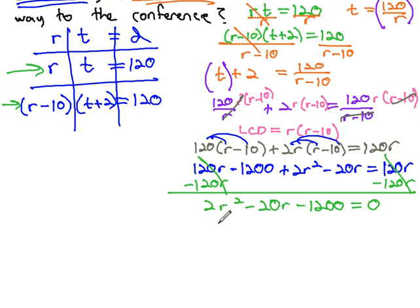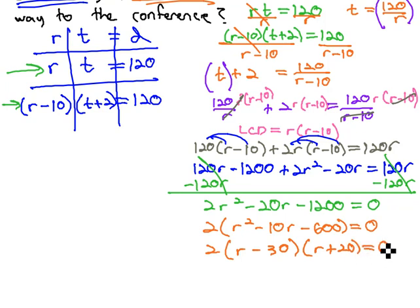Let's start factoring. Pull out the common factor of 2 gives us R squared minus 10 R minus 600 equals 0. And 600 is 20 times 30, so we've got R minus 30 times R plus 20 equals 0.